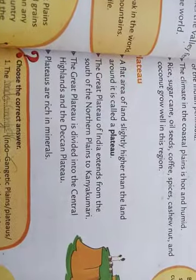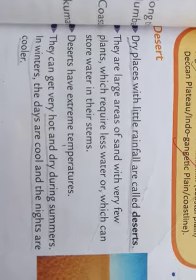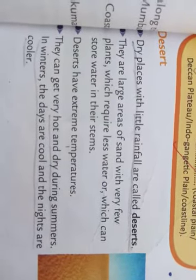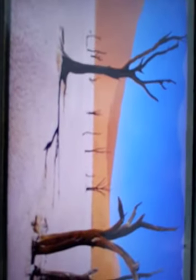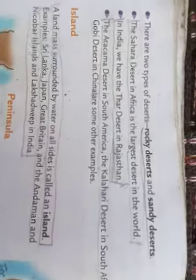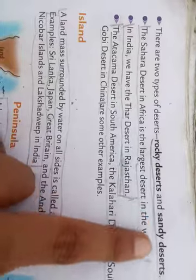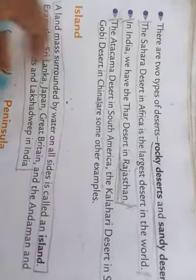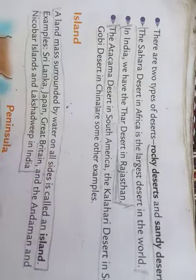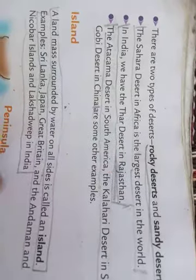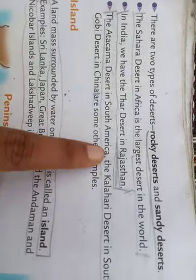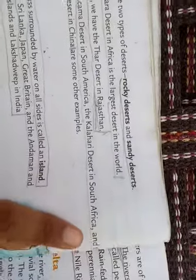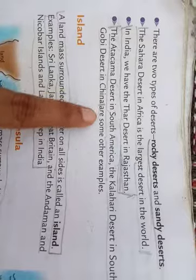The next landform is Desert. A desert is a dry place with little rainfall. Deserts are large areas of sand with very few plants. The desert climate has very hot and dry summers and very cool winters. There are two types of deserts: Rocky Desert and Sandy Desert. The Sahara Desert in Africa is the largest desert in the world. In India, we have the Thar Desert in Rajasthan. Other examples include the Atacama Desert in South America, the Kalahari Desert in South Africa, and the Gobi Desert in China.